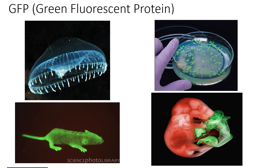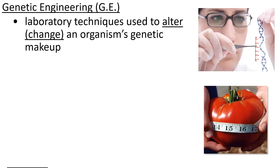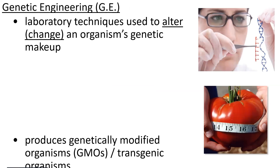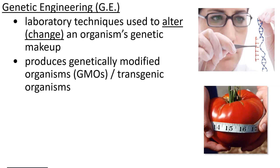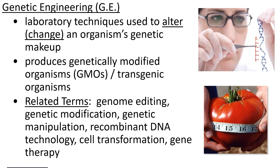Now that we know we can do that, we do it with genes for other useful traits. Genetic engineering is purposely changing or altering an organism's genetic makeup — taking a gene from one organism and putting it into the DNA of a different organism. We have genetically modified tomatoes, genetically engineered viruses, and genetically engineered bacteria. Related terms you might see include genome editing, genetic manipulation, recombinant DNA technology, and gene therapy — all examples of changing DNA by giving one organism the DNA of another.